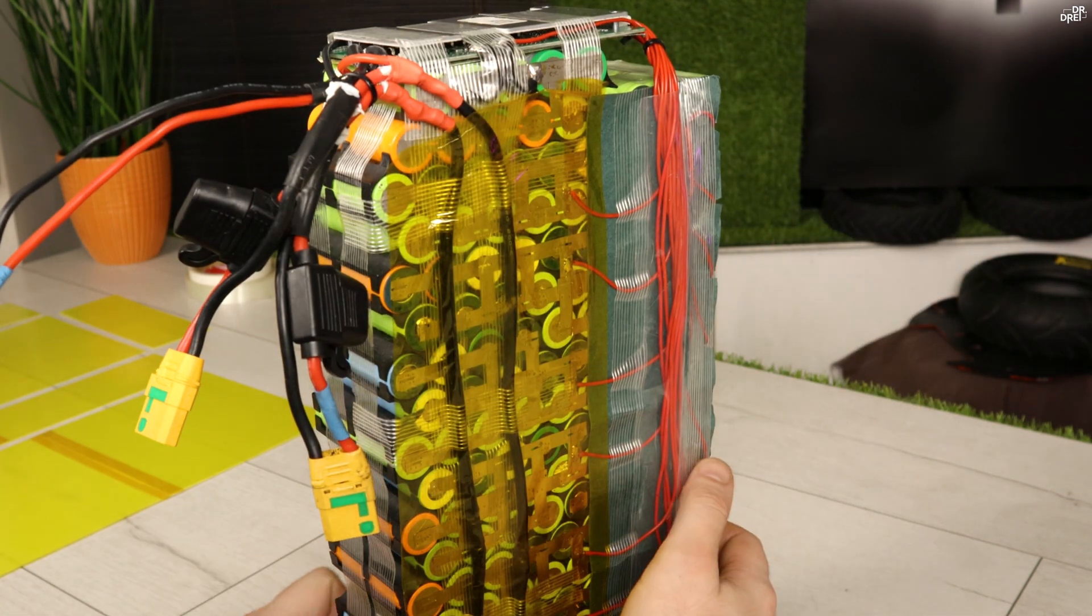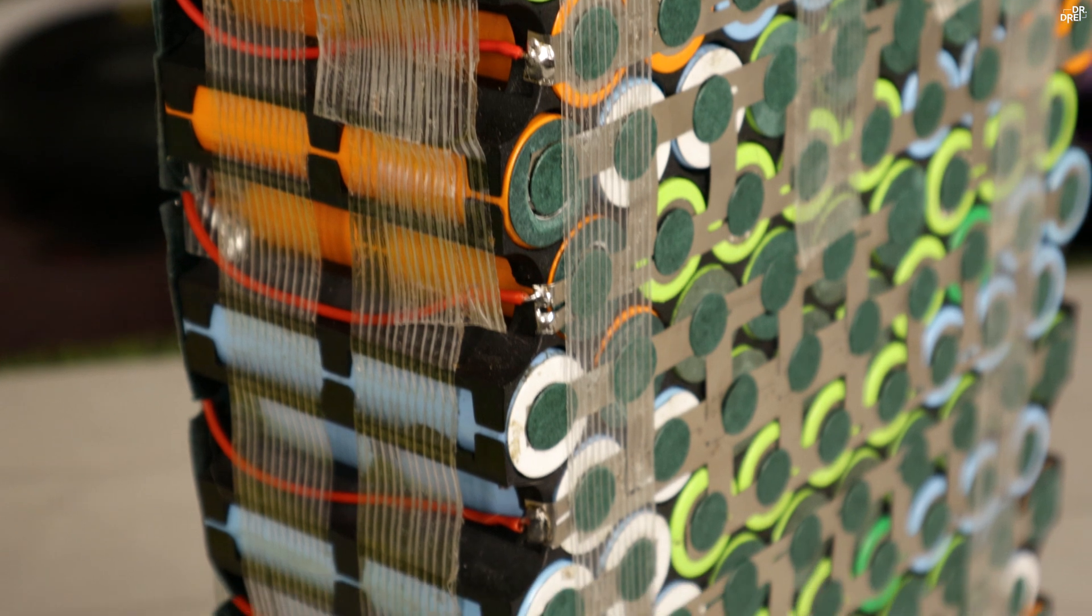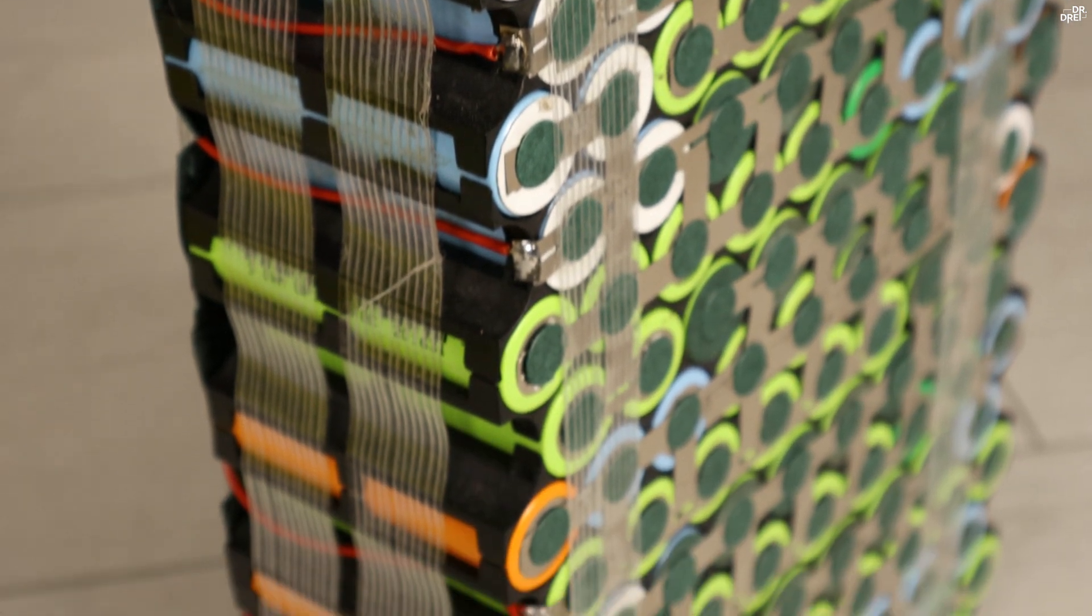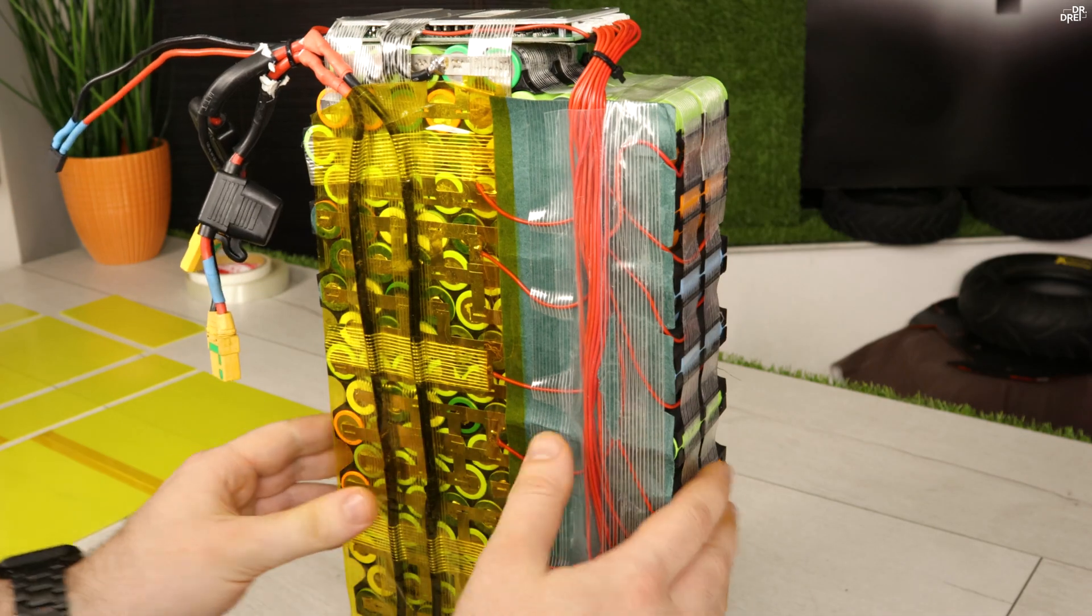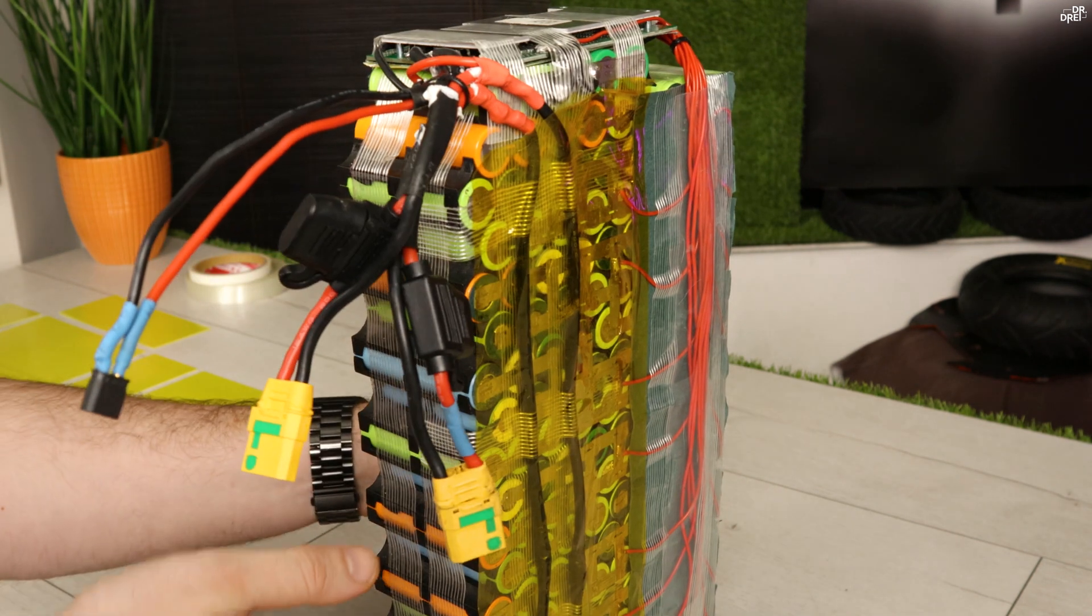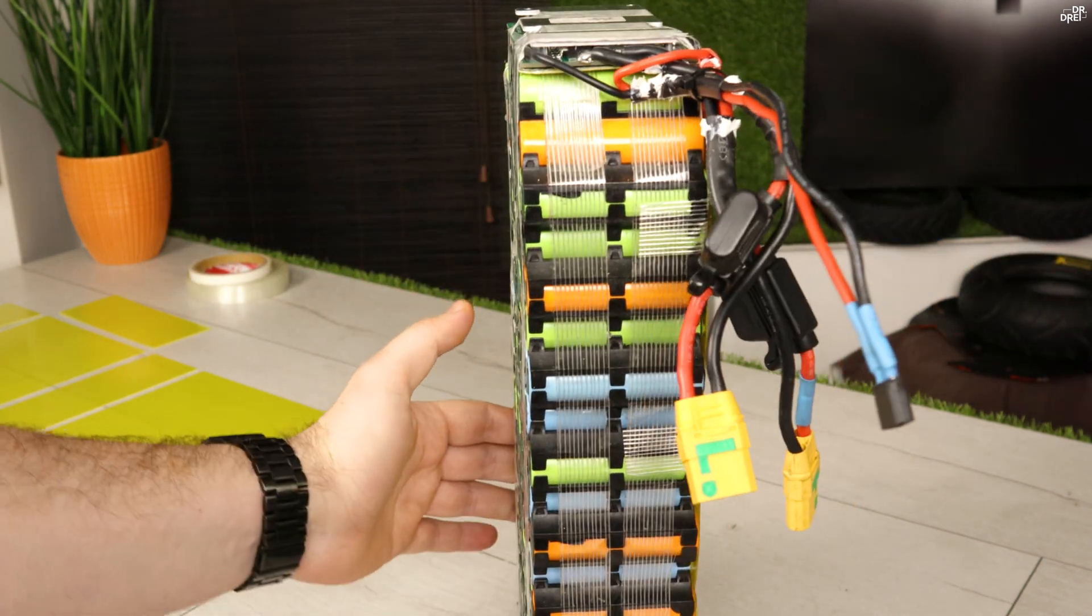Besides the green cells and the LG ones, the pack contains now 10 Sony cells and lots of Samsung ones which are orange. The BMS has a discharge of 120A which is not really necessary. I'm only going to use about 50 of them, at least for now.